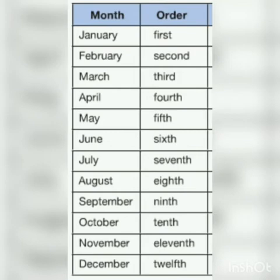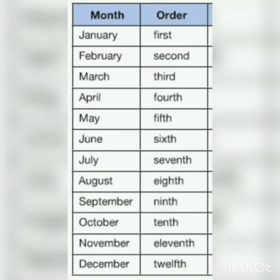June is the sixth month of the year, July is the seventh month, August is the eighth month, September is the ninth month, October is the tenth month, November is the eleventh month, and December is the twelfth month of the year. In this way we can write the order of the months of the year.